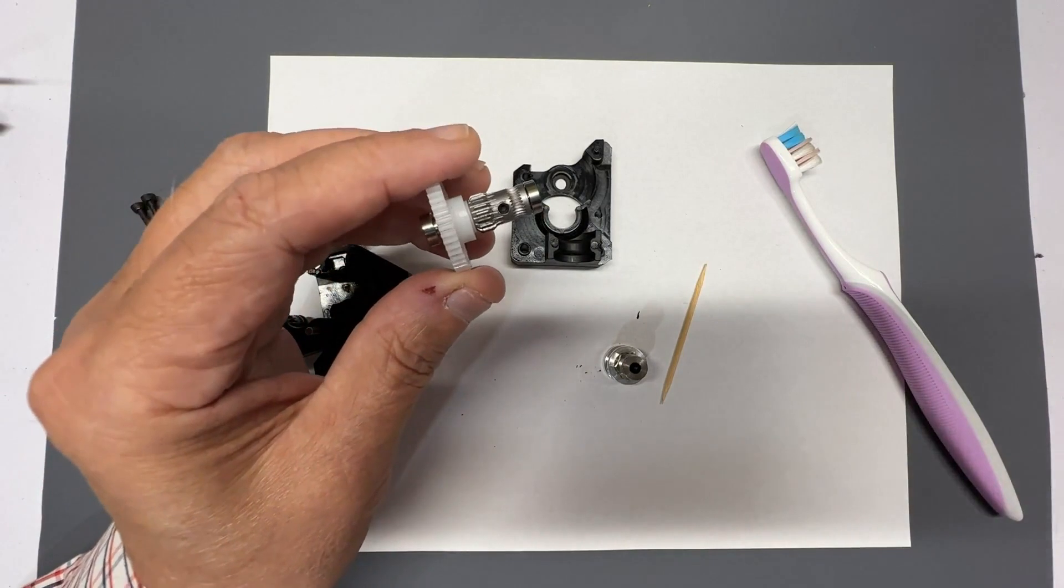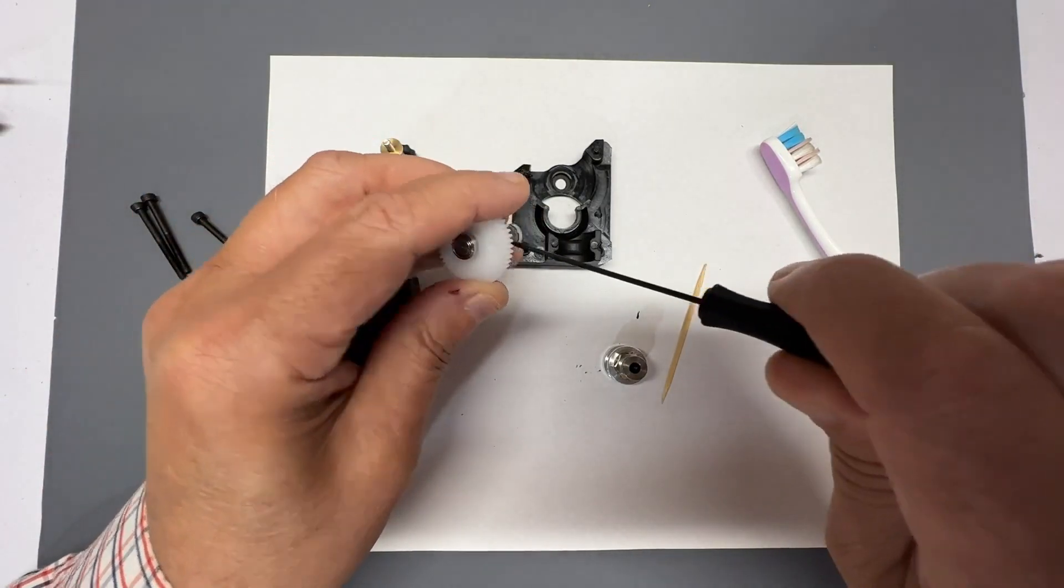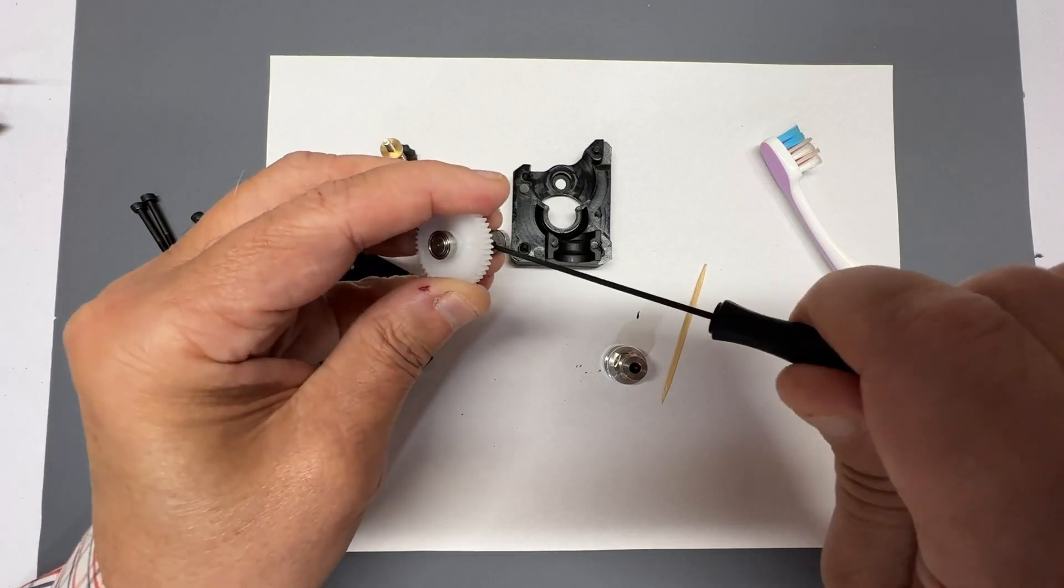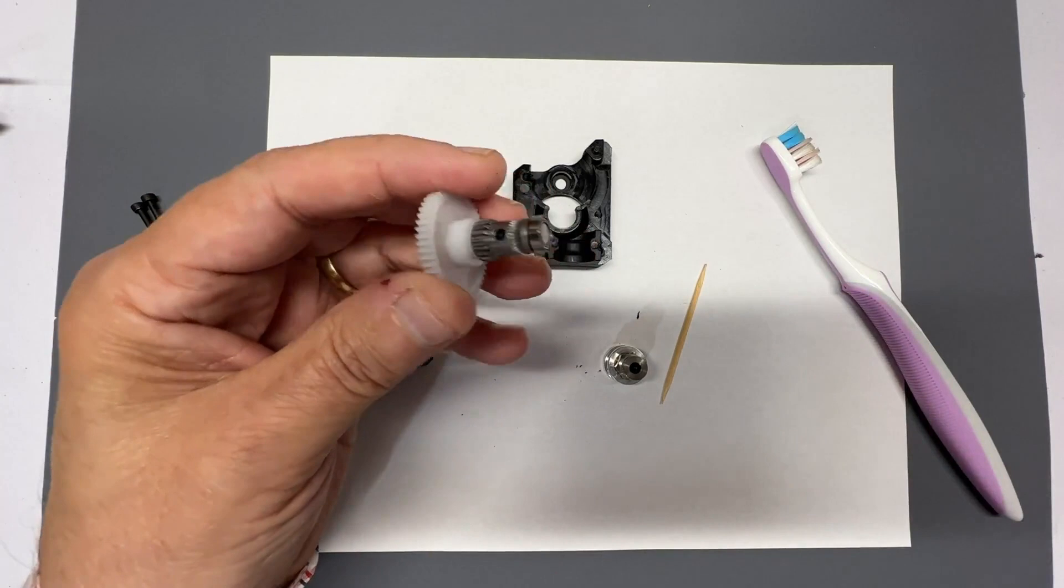So we want to make sure that little set screw is tight. Using this Allen wrench, just put it in there. Just make sure it's very, very tight. Which it is.